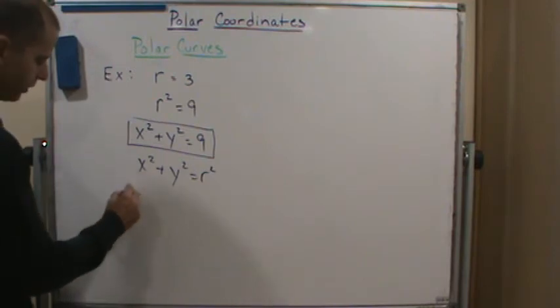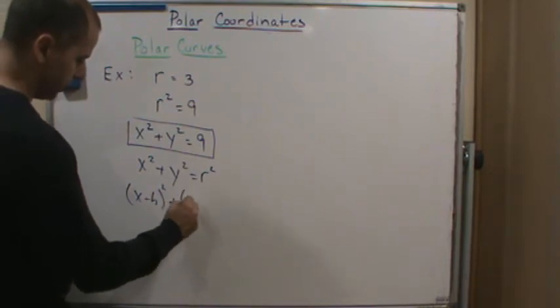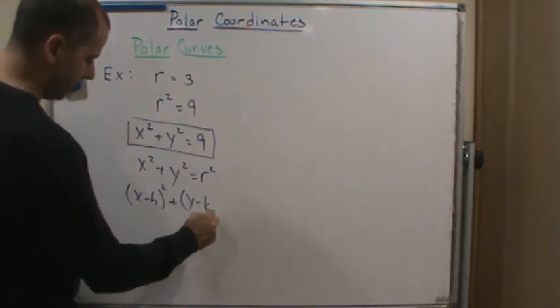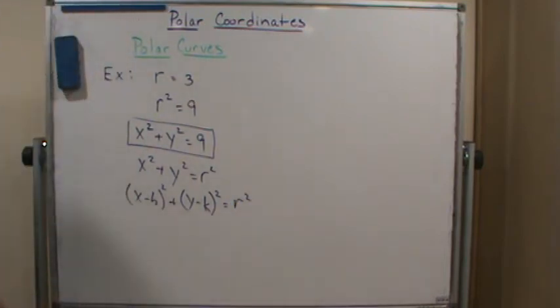And remember, it's x minus h squared plus y minus k squared equals r squared, the standard form of a circle, or the center-radius form of a circle.